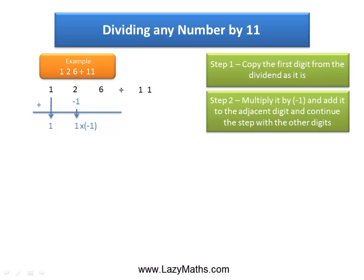Again, multiply the sum with minus 1 and put it right below 6. And we get 6 minus 1 as 5.